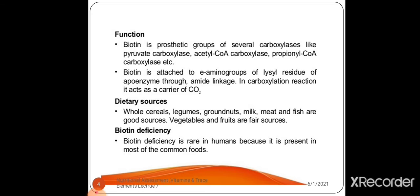Dietary sources: whole cereals, legumes, ground nuts, milk, meat and fish are good sources of biotin. Vegetables and fruits are fair sources. Biotin deficiency is rare in humans because biotin is present in most common foods.